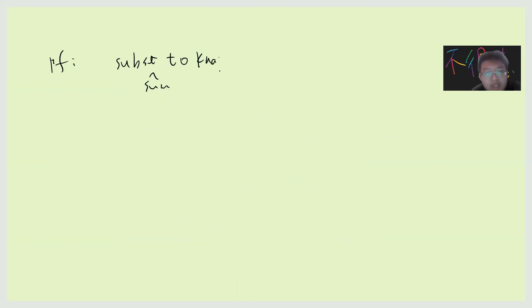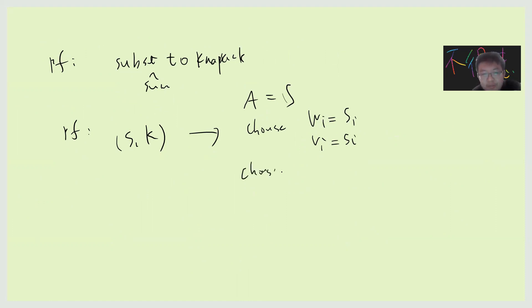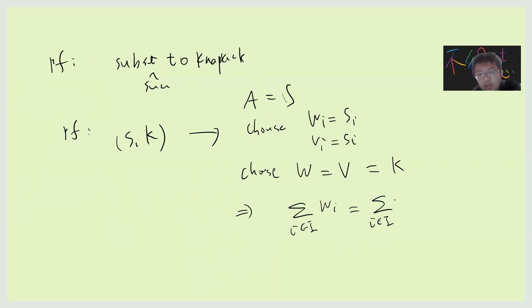Proof: subset sum reduces to knapsack. The proof is very simple. Suppose somebody gives you S and k. You set A to be S, then you choose w_i to be s_i — list your S and label each w_i as s_i — and set v_i equal to s_i. Then choose both the weight constraint W and value constraint V to be k. In this case, the summation of w_i for i in I equals the summation of s_i, so solving the knapsack problem is the same as finding whether there exists I such that the sum of s_i equals k.